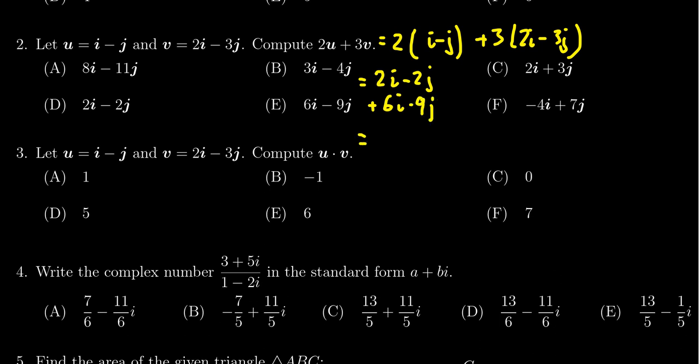And so we get 2i plus 6i, which is going to be an 8i. Then we get negative 2j minus 9j, which is negative 11j.